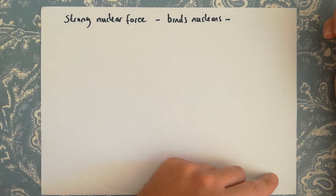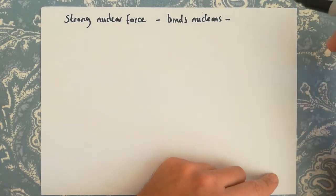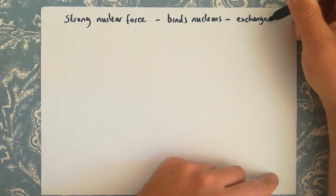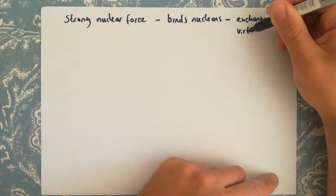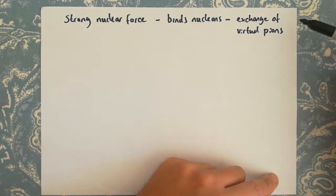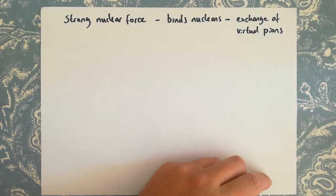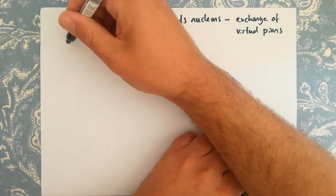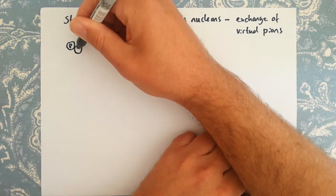The gluon is the exchange particle for the strong force. At a slightly higher-level model, we can consider the force between nucleons to be due to the exchange of pions, or virtual pions. In terms of the exam spec, we need to know that the strong nuclear force is due to the exchange of virtual pions — gluons are not included in the A-level specification.